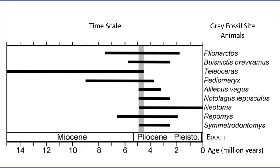Our latest information tells us the Gray site is between 4.5 and 4.9 million years old. And in the future, as we identify more fossil species, hopefully they'll help us keep narrowing down this age estimate. And maybe someday soon we'll finally find substances we can use for absolute dating, which might give us an even more precise idea of exactly how old the Gray fossil site is.